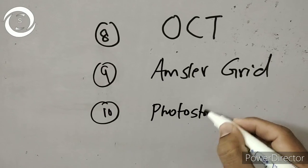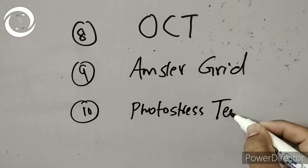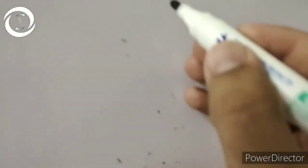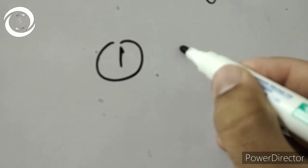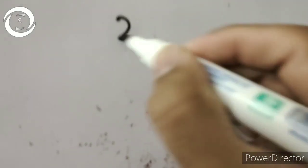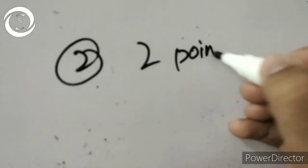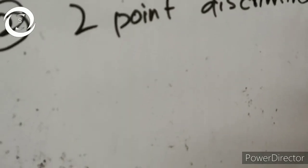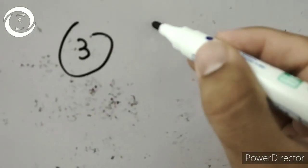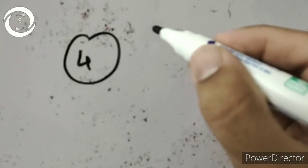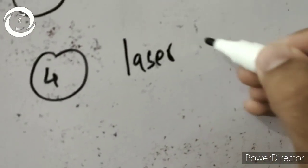A central positive scotoma can also be picked up by the Amsler grid. Then there is the photo stress test — you put a bright light in the eye and ask the patient to look, and the adaptation from light to dark will take more time. There will be a photo stress effect in macular pathologies.